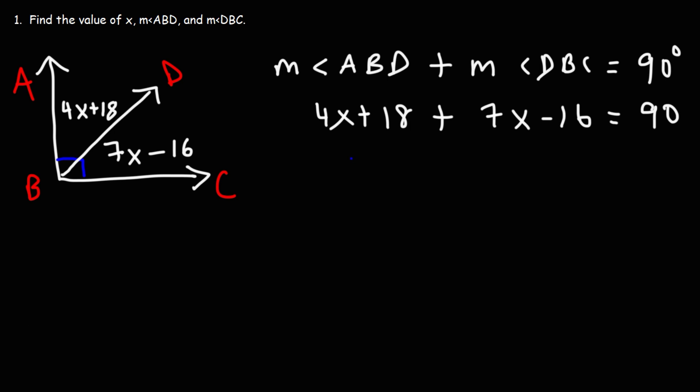So first, we're going to combine like terms. 4X and 7X, we can add that to 11X. 18 and negative 16, that's positive 2.